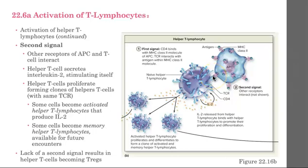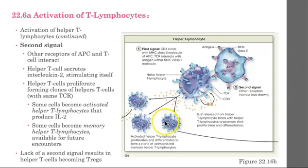The cloned helper T cells also release more interleukin-2 to signal themselves and other cells. We create some memory helper T cells for future encounters with the same antigen, so that if we are reinfected we can generate this army of helper T cells much more rapidly the second time around. If the second signal does not occur, the helper T cells become regulatory T cells instead and inhibit the immune response.